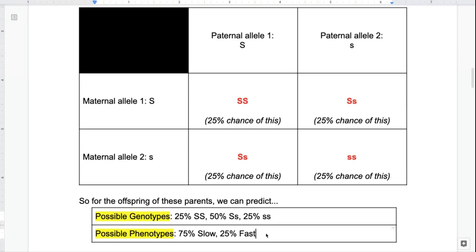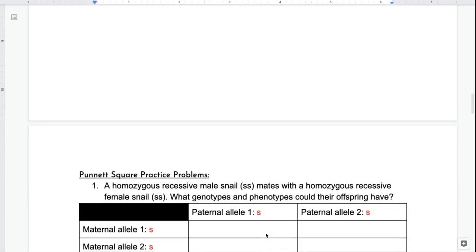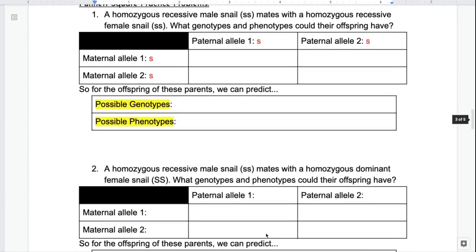So up next you have three examples like this to do on your own. Before you do those, if you need to go back and watch what we just did a few more times to get the hang of it, do that. Then pause the video while you work on those and come back once you've finished these next three Punnett square examples.